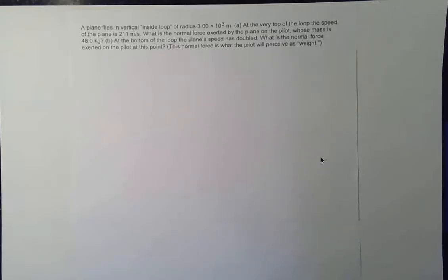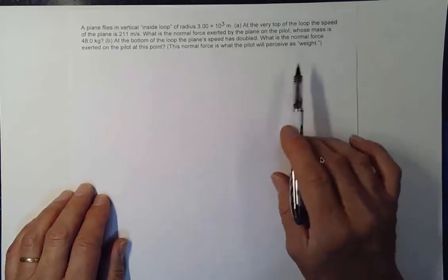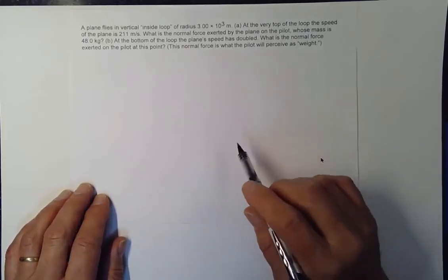At the very top of the loop, the speed of the plane is 211 meters per second. What is the normal force exerted by the plane on the pilot whose mass is 48.0 kilograms?